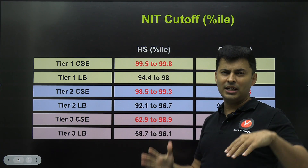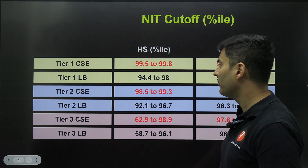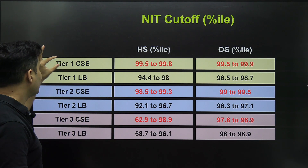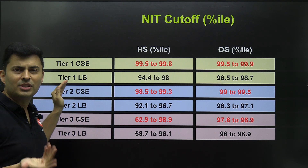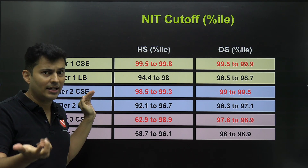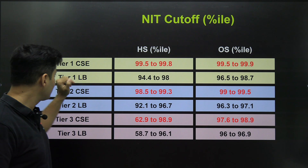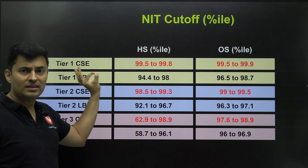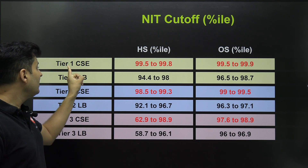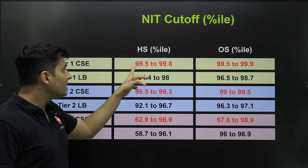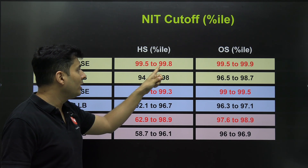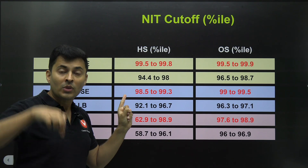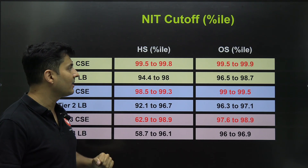Most kids will obviously aim for tier one, either for some preferred branch — maybe electrical, mechanical, or whatever it is — but the majority these days are going for computer science. If you see tier one NITs, computer science ranges from 99.5 to 99.8 percentile for home state. That means if you are in Tamil Nadu, your home state cutoff will be in this range.